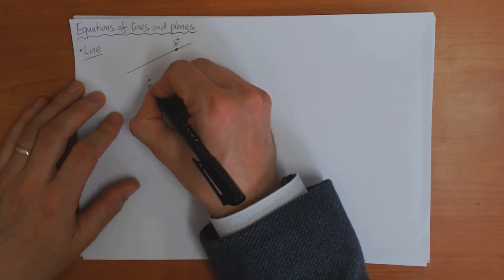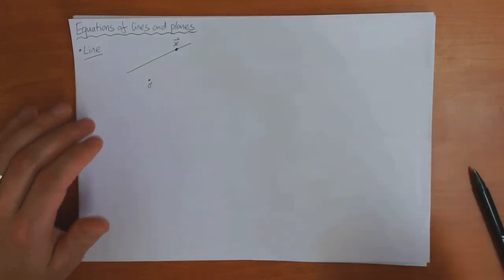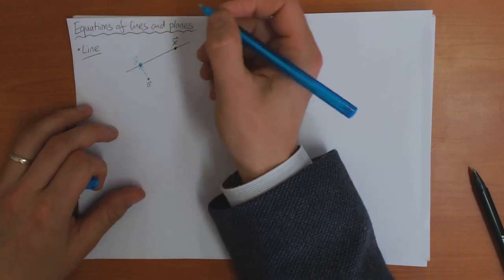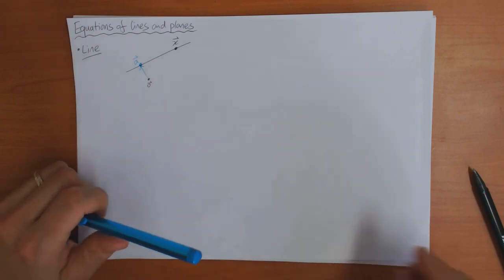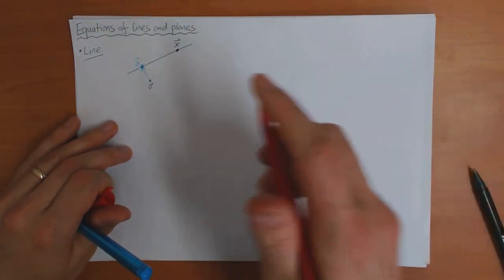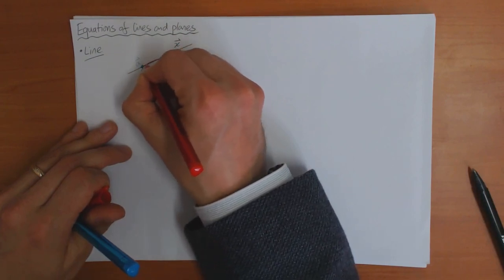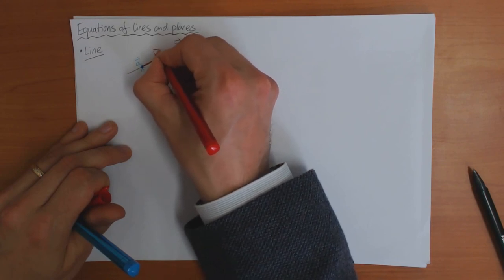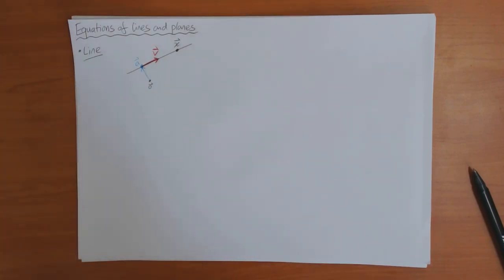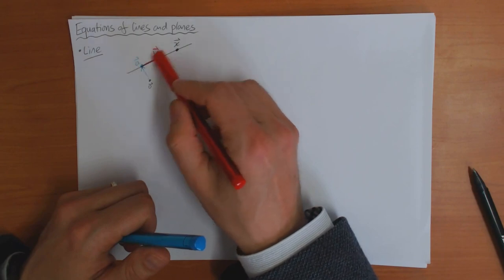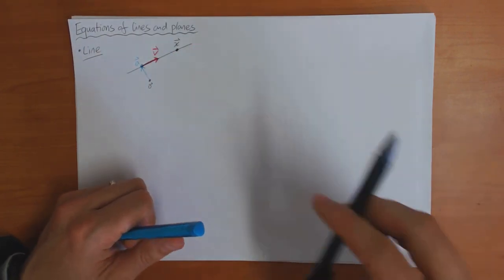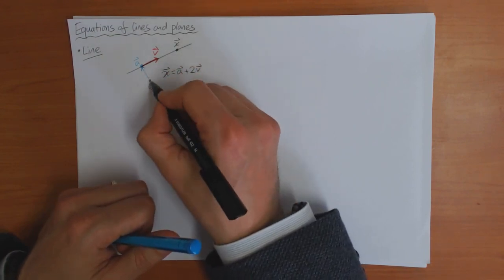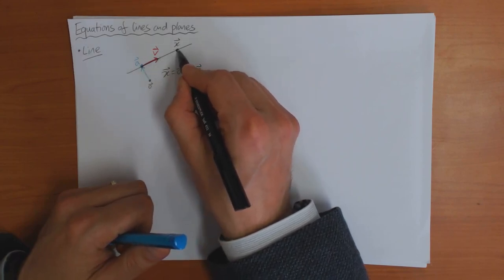Suppose that my zero is here. I can start by taking a point a on the line. As long as I know one point on the line, I can get to any other point on the line by moving parallel to a vector pointing along the line. I'll call this vector v. So I can get any point x on the line using these two vectors a and v. For example, x is equal to a plus 2v — a gets me to the line and then I do v plus v again and I get to x.